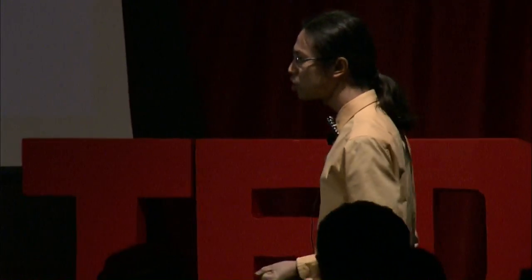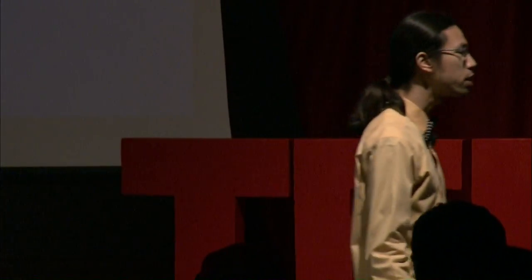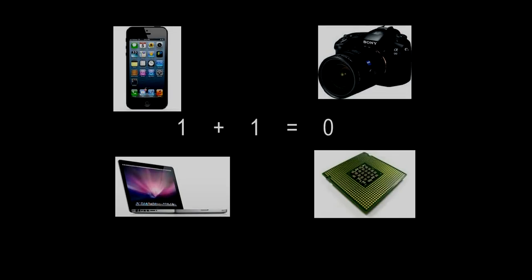In technology — whether a cell phone, a camera, or a computer — as long as they have a processor, they can only read two numbers: ones and zeros. So for them, 1 plus 1 equals 0.